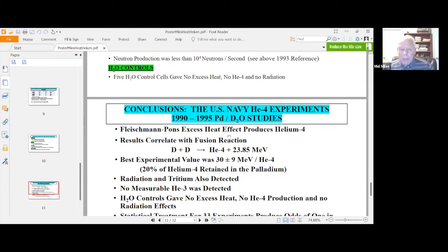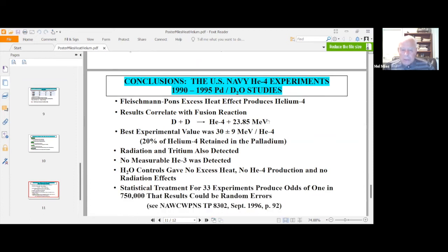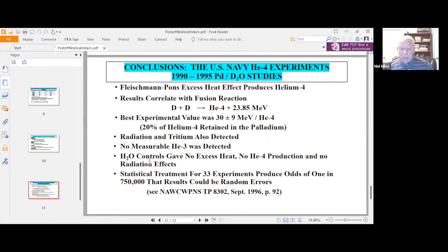The experimental value was 30 plus or minus 9 MeV per helium-4, and that's not surprising. Radiation and tritium also detected, but we never measured any helium-3. I forgot to mention that earlier, but we tried, but we could never detect any helium-3 production. The H2O control systems gave no excess heat and no helium-4 production, and also no radiation effects.